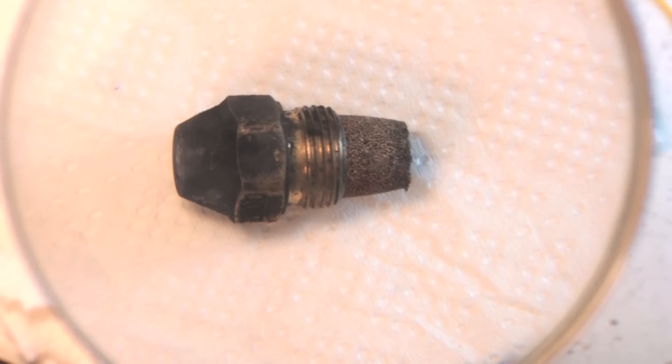This is a standard oil nozzle. This one's a Delavan. Delavan, Monarch, and some Danfoss are what we see in the field. I'm going to disassemble this and we can see how it works.